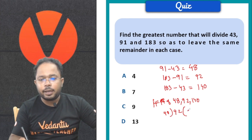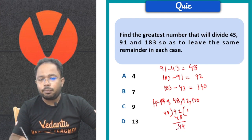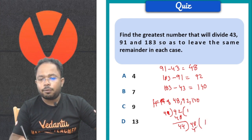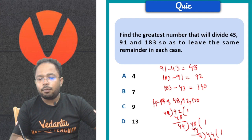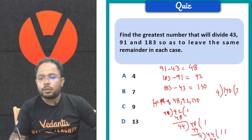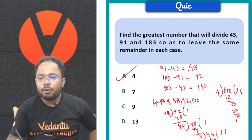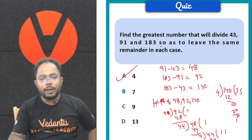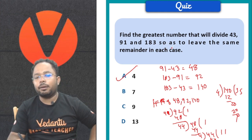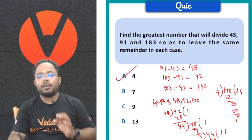Dividing with the long division method: HCF of 48 and 92 — 12 minus 8 is 4, remainder 4. Then checking with 44: remainder leaves 4. And 140 gets divided by 4 completely — 4 times 35 is 140. So therefore we are getting 4 to be the highest number which will divide 43, 91, and 183, and in each case it will give the same remainder.